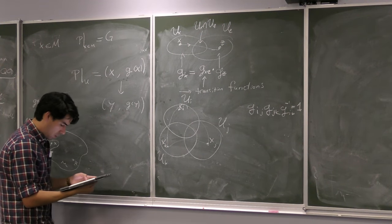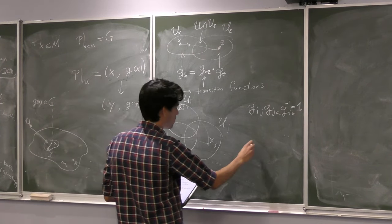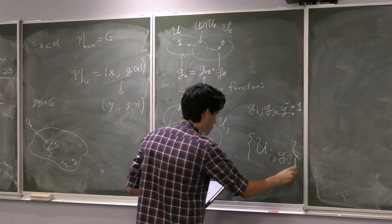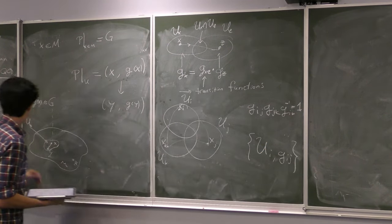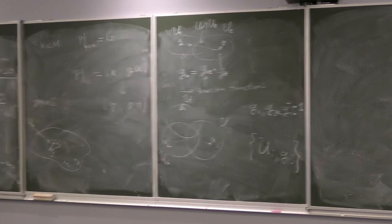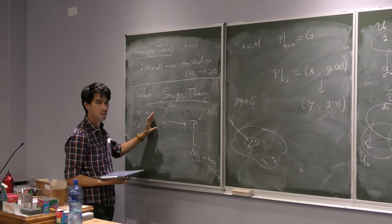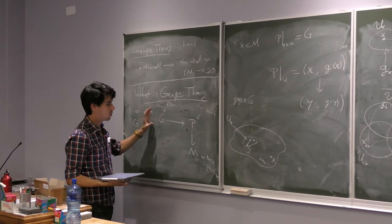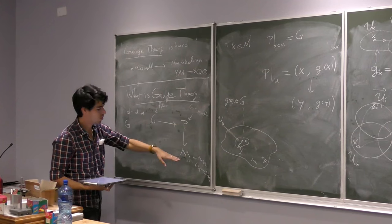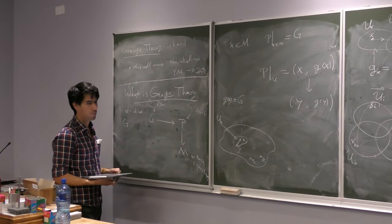The set of all U_i's and g_{ij}'s specifies an exact principal bundle. These are what you sum over in the path integral. You can think of gauge theory as a version of quantum gravity where you're summing over a spacetime that looks like P, keeping the base manifold fixed.